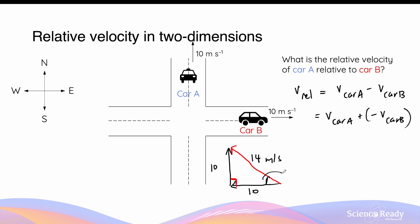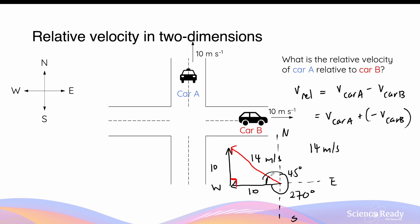To find the resultant vector — that is the relative velocity — we draw the tail of one vector to the head of the other, forming the hypotenuse of a right angle triangle. As previously calculated, the magnitude of this vector is 14 meters per second and the angle is 45 degrees. Drawing the compass directions — north, east, south, west — this angle covers three quarters of a revolution, so 270 degrees. The true bearing is 270 degrees plus 45 degrees, which equals 315 degrees true bearing. This is the velocity of Car A relative to Car B.